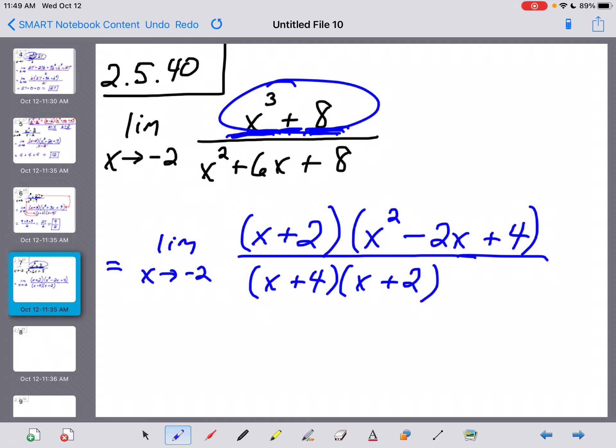So that's what you're going to end up with in that numerator there. That is how a sum of cubes factors. And sure enough, the x plus 2 on the top, the x plus 2 on the bottom cancel out, and it looks like plug and chug is going to work now. So here we go.